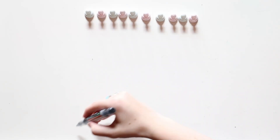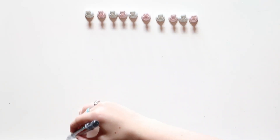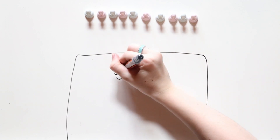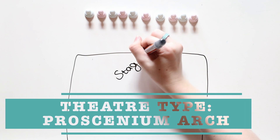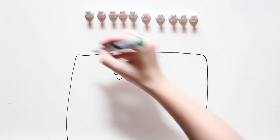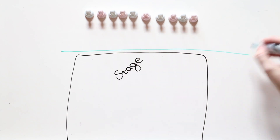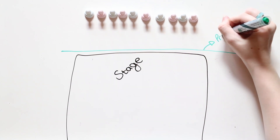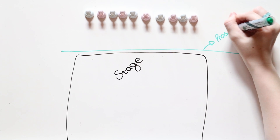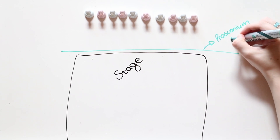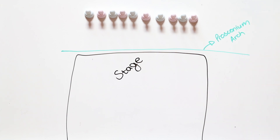Theatre as place usually refers to the four conventional theatre types or theatrical spaces. First, we have the proscenium arch theatre type. The proscenium arch is the fourth wall. With a proscenium arch theatre type or theatre space, there is a clear divide between the audience and the actors, where the audience looks on from an outsider's point of view.